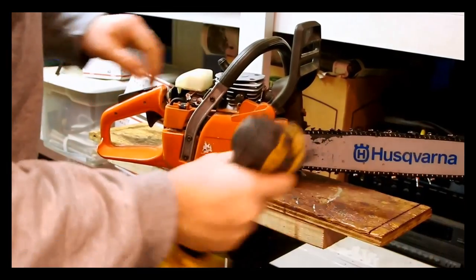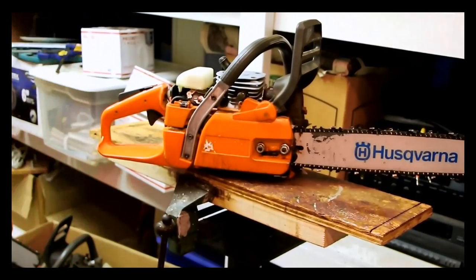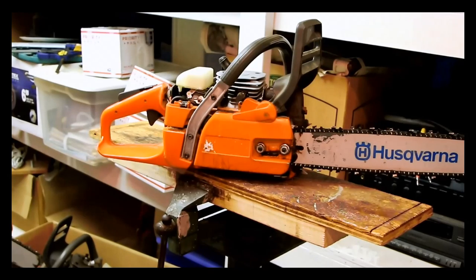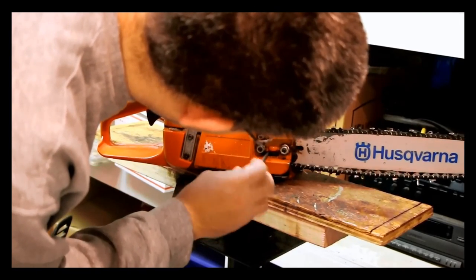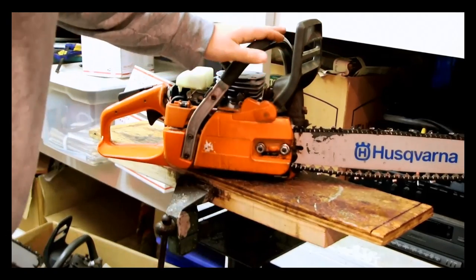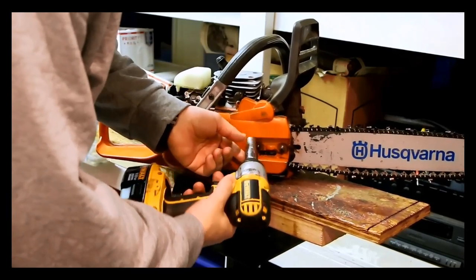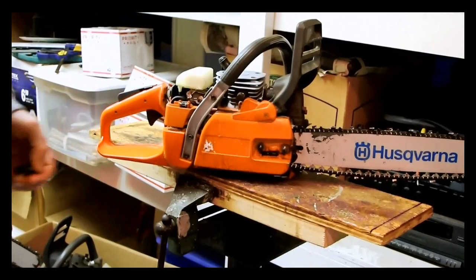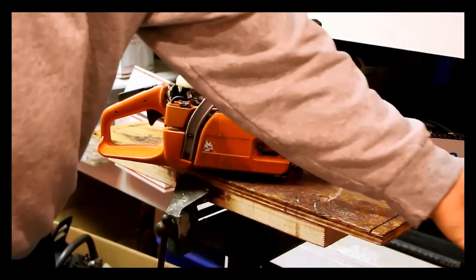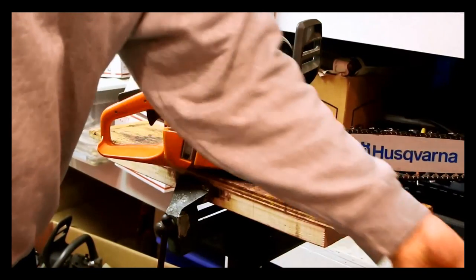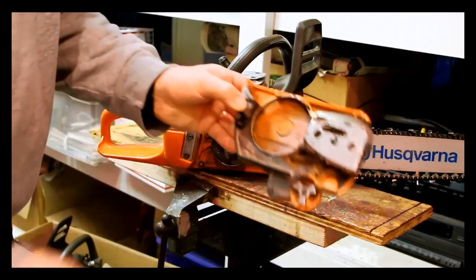Now I'm going to remove the bar and chain. What you want to do here is make sure that you loosen this a little bit before you take this fully off. You need a box to put all this stuff in. What I like to do with the metal pieces is put them on a magnetic tray. It's very helpful.